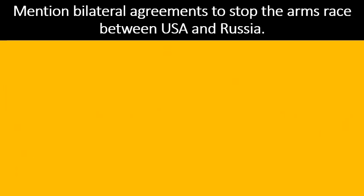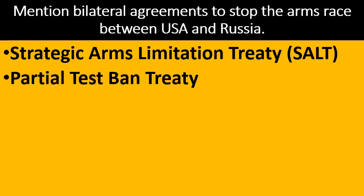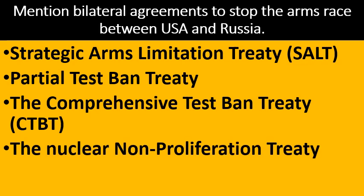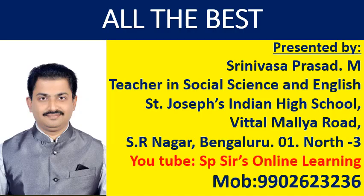Mention bilateral agreements to stop the arms race between USA and Russia. These are some of the agreements signed between USA, Russia and many other countries to stop the arms race. Dear students, I wish you all the best. Learn all these questions and write them in a book. Thank you.